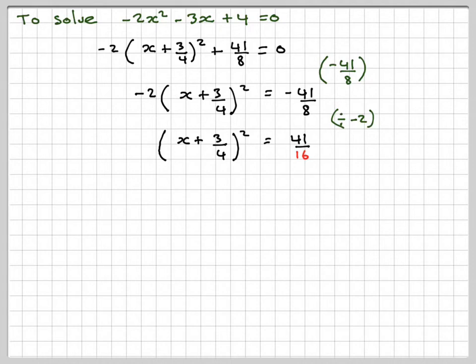Alright, so you have to be quite good at fractions for this. Notice the change of sign. It's now positive because it would have to be because the next step would be to take the square root of both sides. So take the square root of this side. We just get x plus 3 over 4.